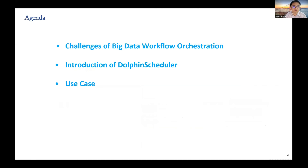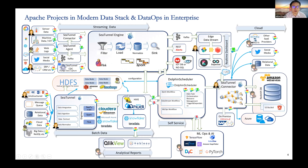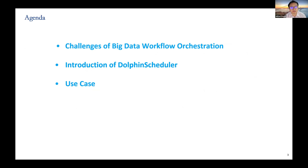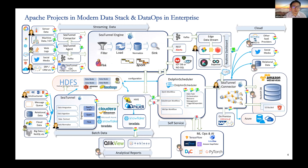Today I want to introduce three parts in my session. The first is the challenges of big data workflow orchestration. The second part is an introduction to DolphinScheduler. And the last part is a use case of DolphinScheduler. There are many Apache projects in modern data stacks and DataOps in the enterprise.